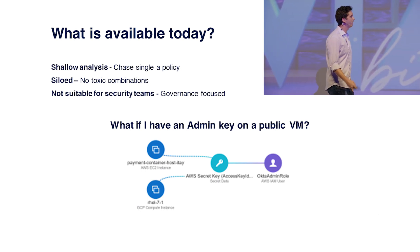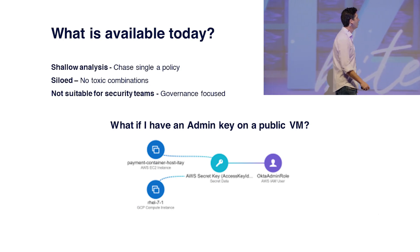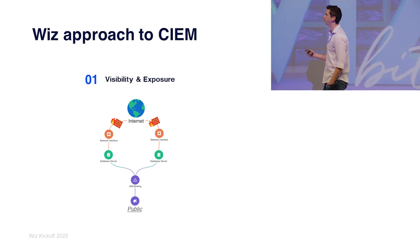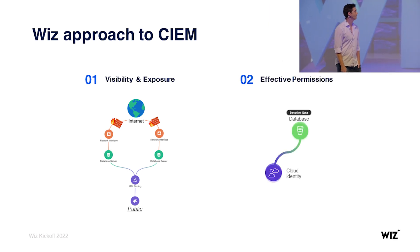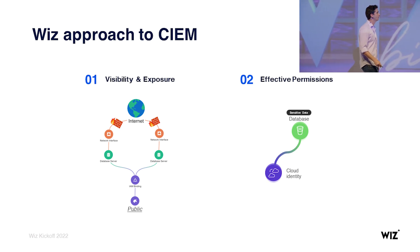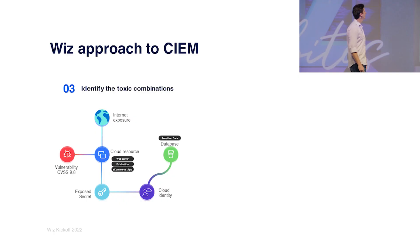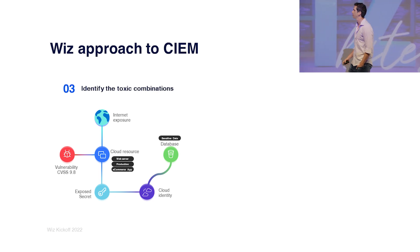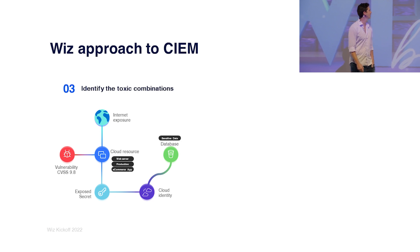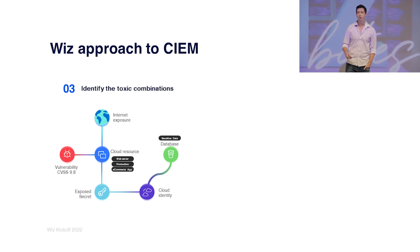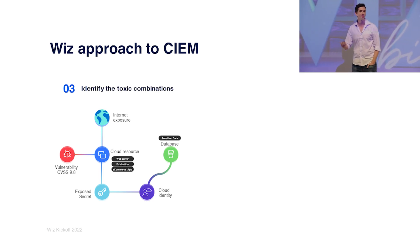So how does Wiz solve for that? And this is what I want you to take from here. One, it's all about visibility and exposure. But if you don't know what you have, how can you do something about it? The second thing is effective permissions. We go out of our way to calculate effectively who can access what — not just theoretically, but really give you the effective, boiled-down version of who has access to your data, your virtual machines, or your infrastructure. The third thing is, like anything else in Wiz, it's part of the bigger picture. It's all about the toxic combinations. A virtual machine with an exposed key, if it's not vulnerable, if it's not public-facing, is less interesting. So toxic combinations in context is the king.